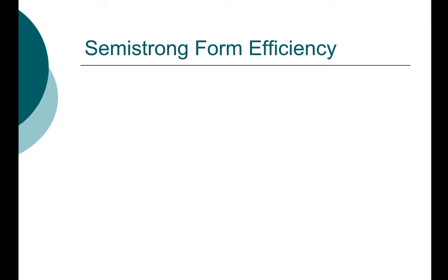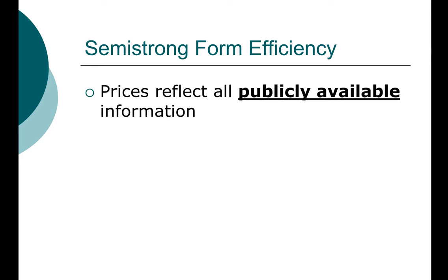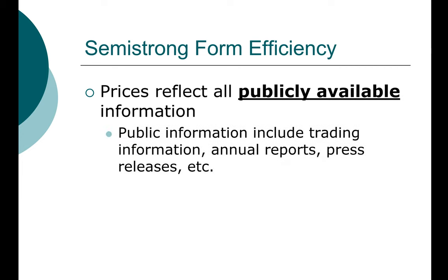Next, let's take a look at semi-strong form efficiency. The information set we are working with includes all publicly available information — both free and subscription-based. This includes past prices and past trading volume, as well as financial data such as annual reports, press releases, and any information that comes directly from companies. In addition, derivative information such as analyst reports — where an analyst reviews annual reports and new product development — is also included, even if those reports cost up to $1,000 per year.